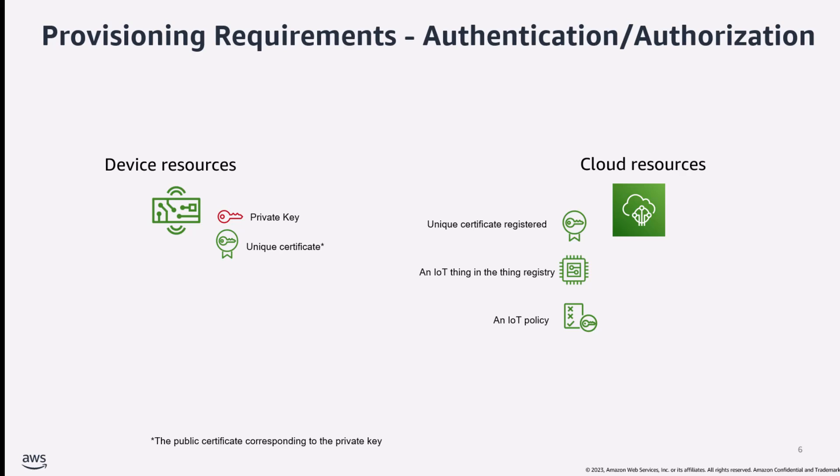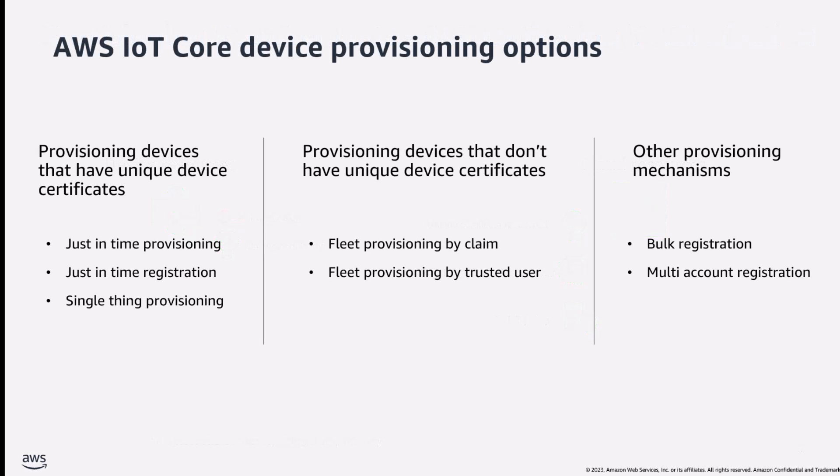If you start your IoT project from scratch, none of the cloud-side resources exist prior to onboarding. This means the provisioning mechanism selection mainly depends on the device-side readiness beforehand. The main question is: are the unique certificates and private keys already in your devices? Here's a holistic view of the mechanisms offered by AWS, categorized by device readiness. On the left are mechanisms for devices that already have certificates, the middle for devices that don't, and we have some special cases we'll cover in this series.